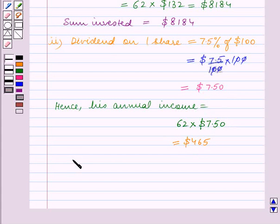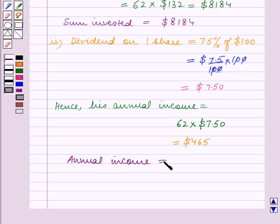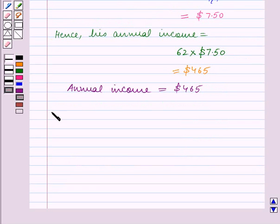So, the answer for part 2 is annual income is equal to $465. We now move on to part 3.